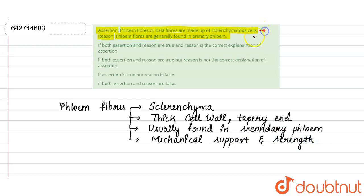So now we know from the following statement that both assertion and the reason statement are false. Both are false because first one says it's collenchymatous but we know it's sclerenchyma in nature. Second statement says it's found in primary phloem and we know it's found in secondary phloem.